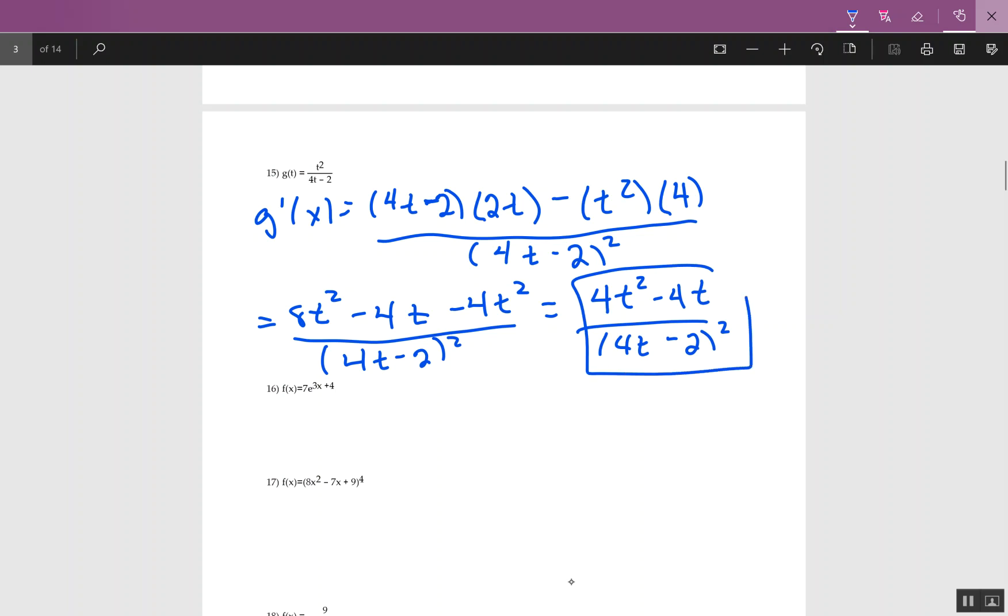So this is the way I would want the answer. If you want to factor out a 4t, that's fine too, but I think that's good enough.